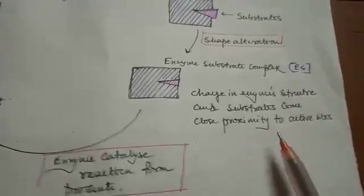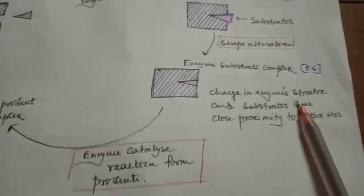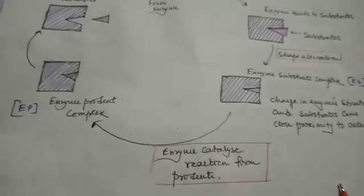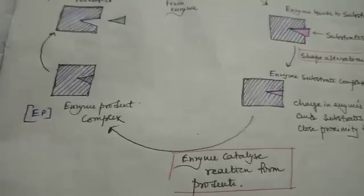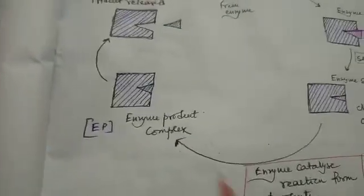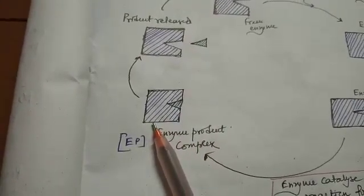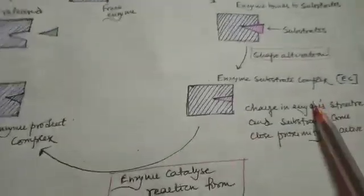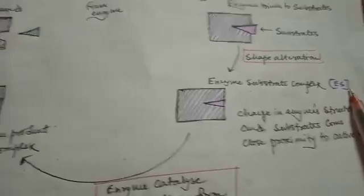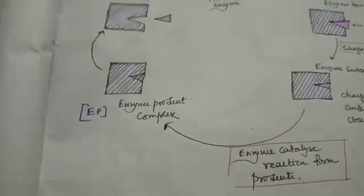As a result of the close approximation between the active site of the enzyme and the substrate, the enzyme will have its own catalytic reaction. The enzyme catalytic reaction forms the product from the substrate. Initially, the product will remain associated with the enzyme and will form the enzyme-product complex. We can see the enzyme-substrate complex transitioning here.